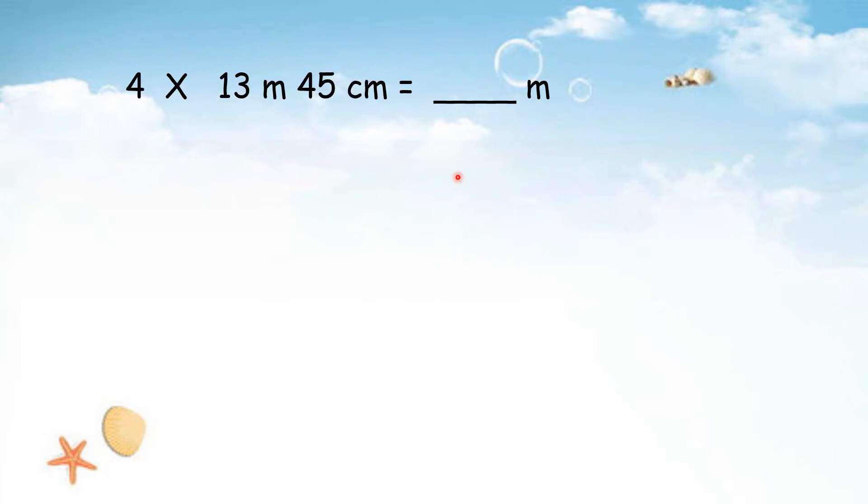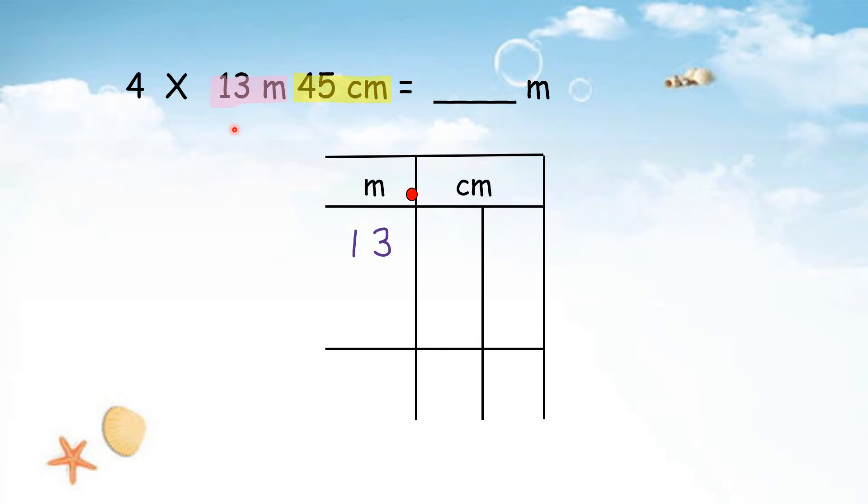Example 3: 4 times 13 meter 45 cm, and the answer is in meter. So for m and cm, we will choose 1-2 box. M and cm. Now we fill in the number with the measurement, the number with unit, 13 meter. So we write 13 at the column of meter and 45 cm, like this. And then times 4. Then we start to times from the back.